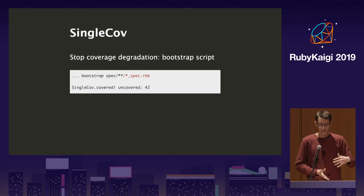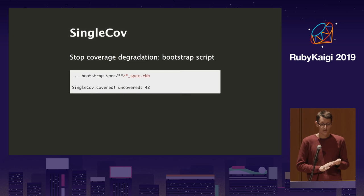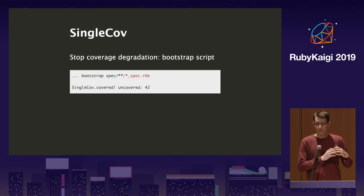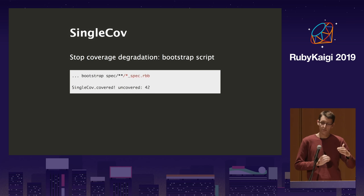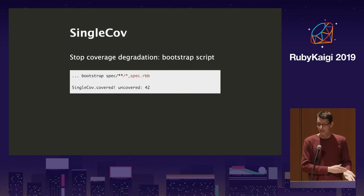You can also take a more global approach by nailing down the current coverage. SingleCov has a bootstrap script that goes through all your files, runs them, and puts comments into files indicating how many lines are missing — 10 lines missing, 15 lines missing. Nobody can add new uncovered code without getting a warning. It's a nice 'stop the bleeding' approach where you don't have to wait for everyone to agree on fixing coverage. Every new line gets an error, existing lines are exempt.